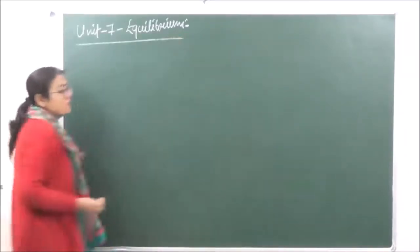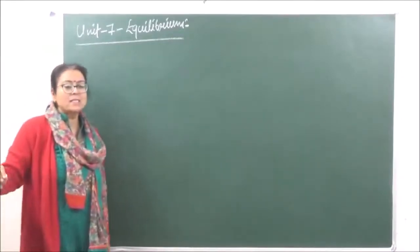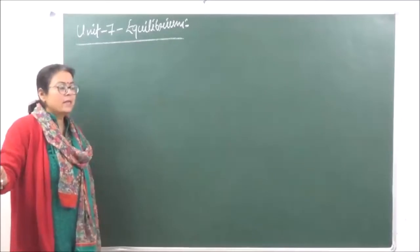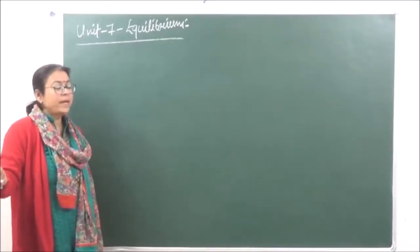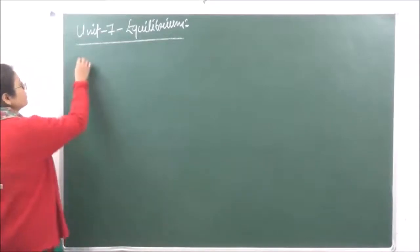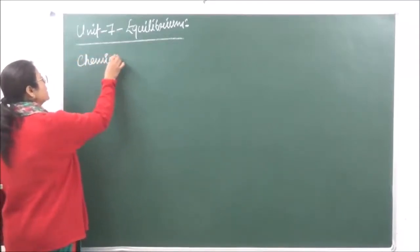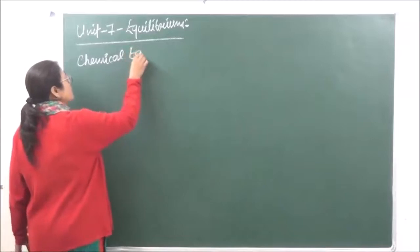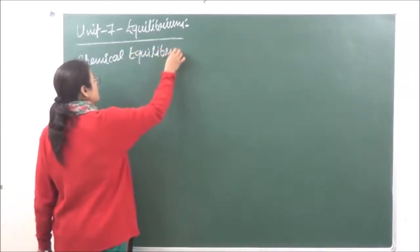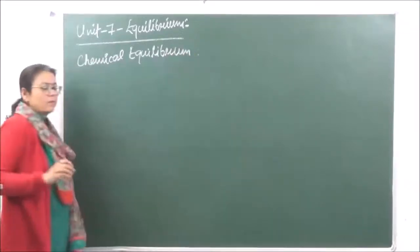Unit 7, Equilibrium. As I just told you, we have categorized this into two different parts — one is Chemical Equilibrium and the second one is Ionic. We are going to start with the first part today, which is Chemical Equilibrium.